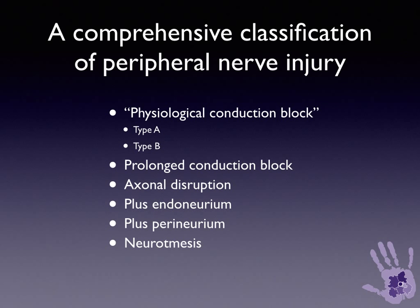Conduction block can be type A, which is an intraneural circulatory arrest — a bit like blowing a fuse in a wiring circuit. Type B is edema within the nerve. Prolonged conduction block is demyelination along a segment of nerve. Then we have the Sunderland classification with different degrees of axonal disruption, endoneural tube damage, perineural damage, and neurotmesis, which is transection of a nerve.